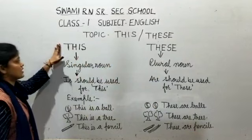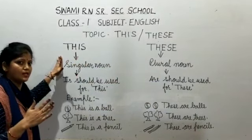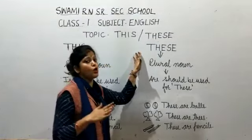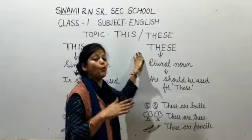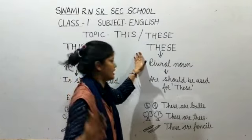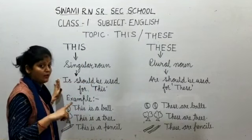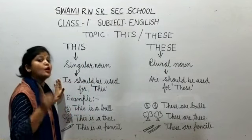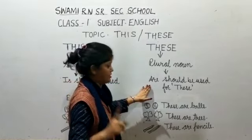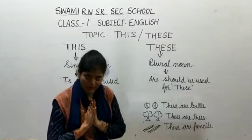To summarize: 'This' is always used for a singular object, person, place, and thing. 'These' is always used for more than one object, person, place, and thing. 'Is' should be used with 'this', and 'are' should be used with 'these'. Okay, namaste.